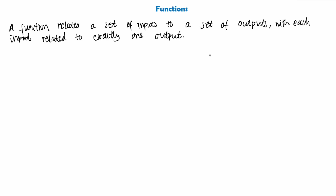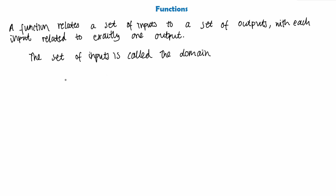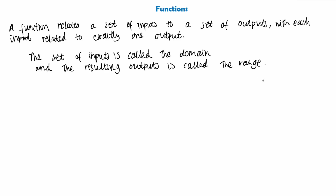A function relates a set of inputs to a set of outputs. The set of inputs is called — and this is a very important word — the domain, and the resulting outputs are called the range. We'll visualize what this means with a little diagram.